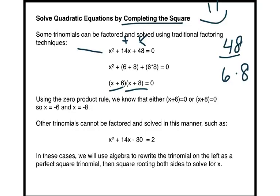Using the zero product rule, we know that either x plus 6 equals 0 or x plus 8 equals 0, and so our solutions are negative 6 and negative 8.